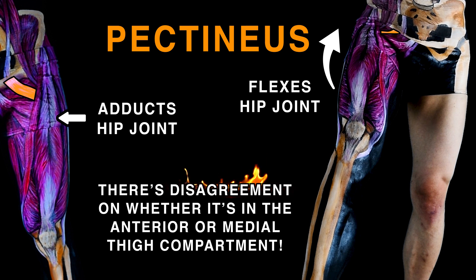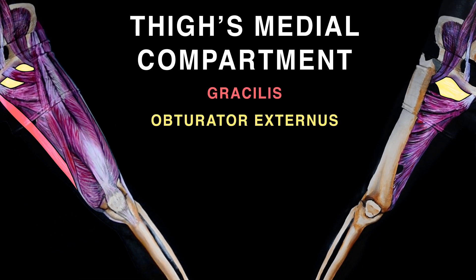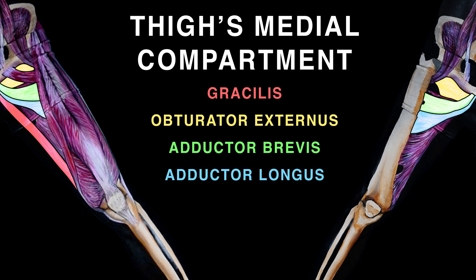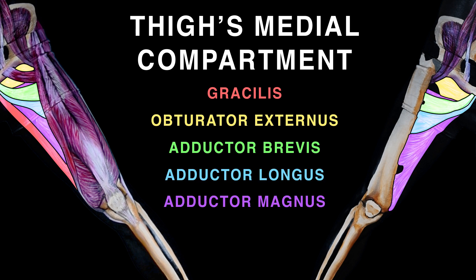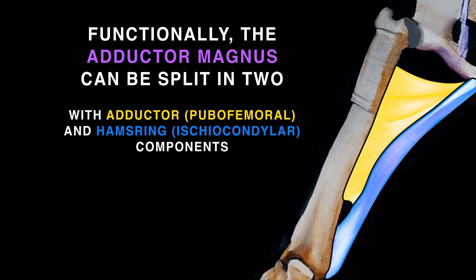The thigh's medial compartment has gracilis, obturator externus, adductor brevis, adductor longus, and adductor magnus. Functionally, the adductor magnus can be split in two, with adductor and hamstring components which we'll now review.